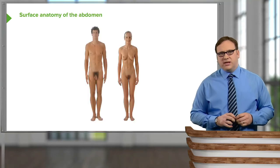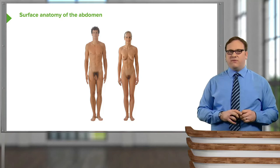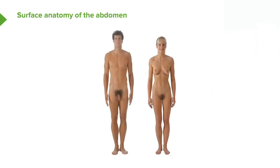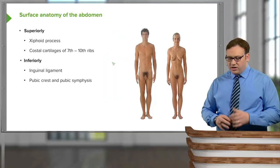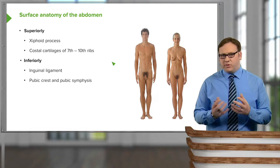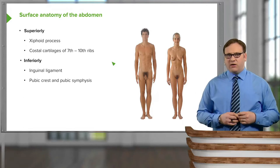On the screen we can see the body plan of the male and the female. We're going to be concentrating on this abdominal region, positioned inferior to the thorax. On here, we can pick out a series of important landmarks, some of which we can feel on ourselves.